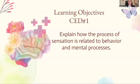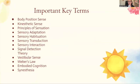We're going to start with the first CED question: explain how the process of sensation is related to behavior and mental processes. I'm just going to go through the questions that have some important key terms you need to know. This is the list for the first question, and we're going to go through each word — say the definition and the example — and then at the end I'll flash the words on the screen so you can try to remember what they are.